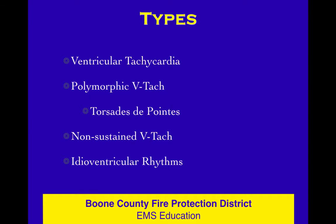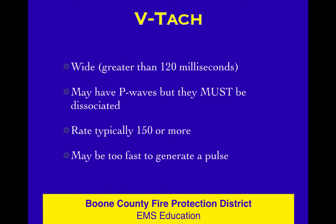There are various types of ventricular rhythms. VTAC can be polymorphic or monomorphic. There's a special subset of polymorphic VTAC called Torsades. We also have runs of VTAC, non-sustained VTAC, and idioventricular rhythms. The common thing is that the QRS must be wide — wider than 120 milliseconds. There can be P waves in VTAC, but they must be dissociated.